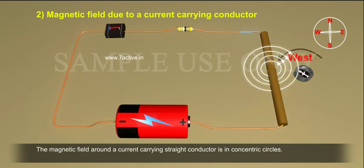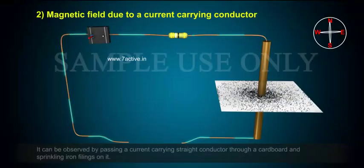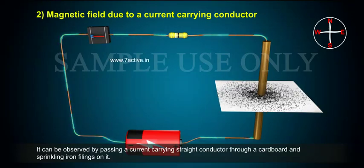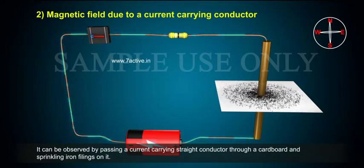The magnetic field around a current carrying straight conductor is in concentric circles. It can be observed by passing a current carrying straight conductor through a cardboard and sprinkling iron filings on it.